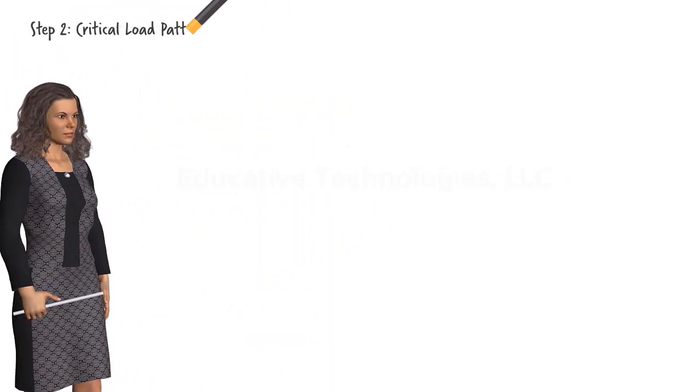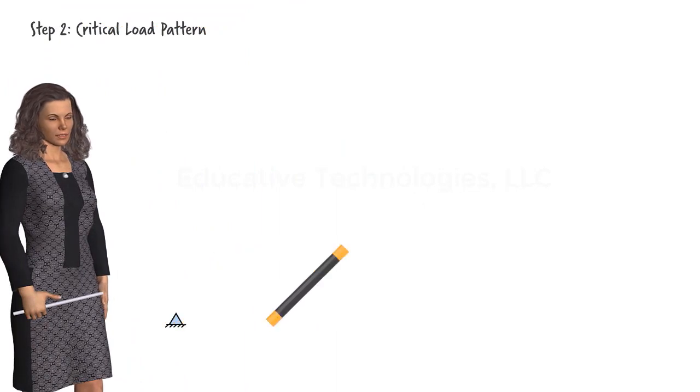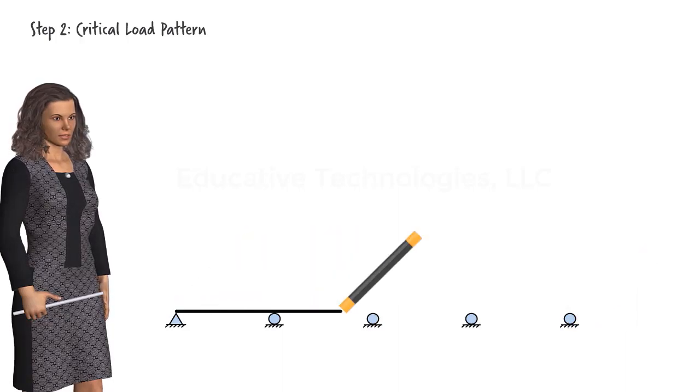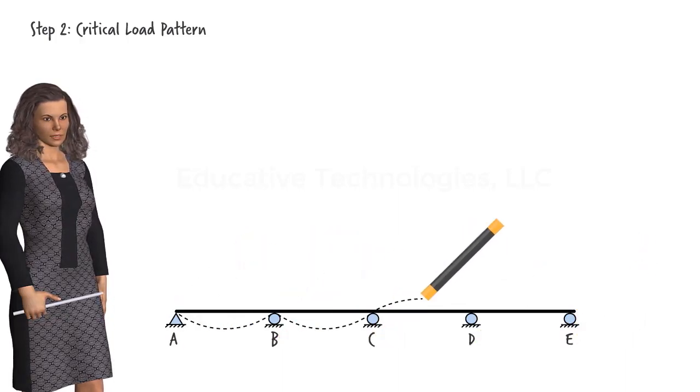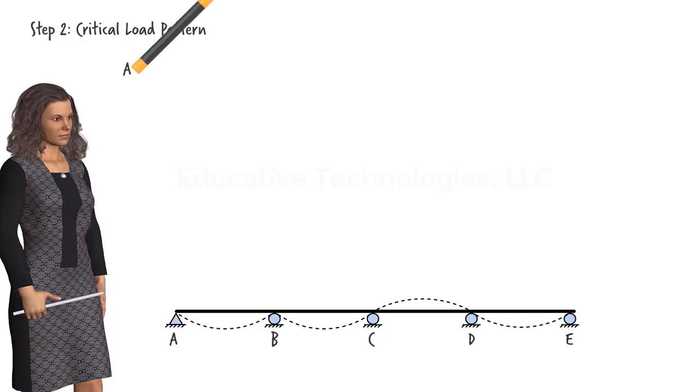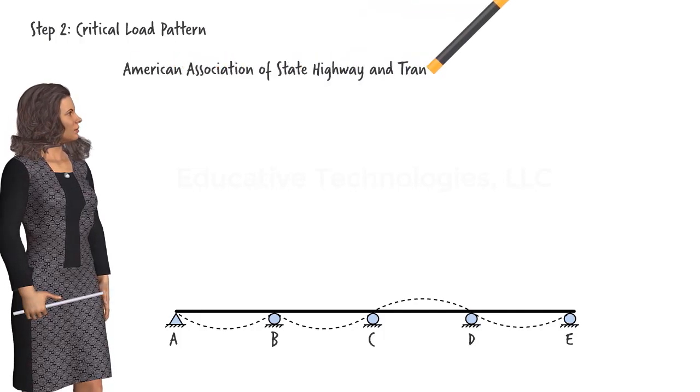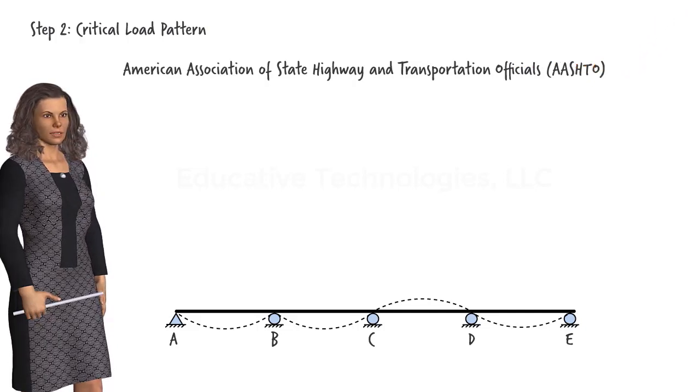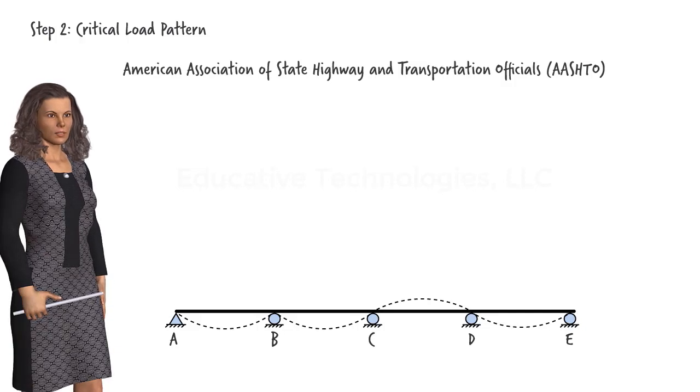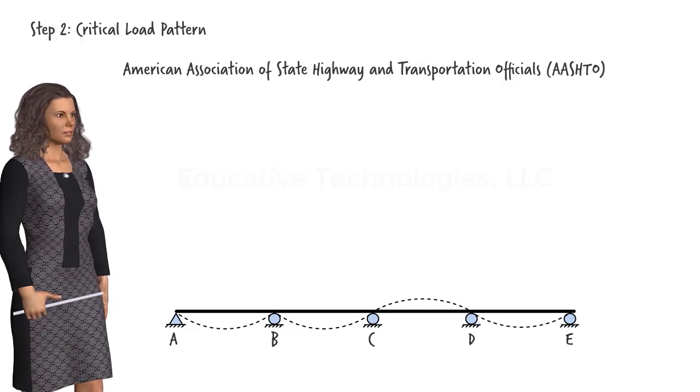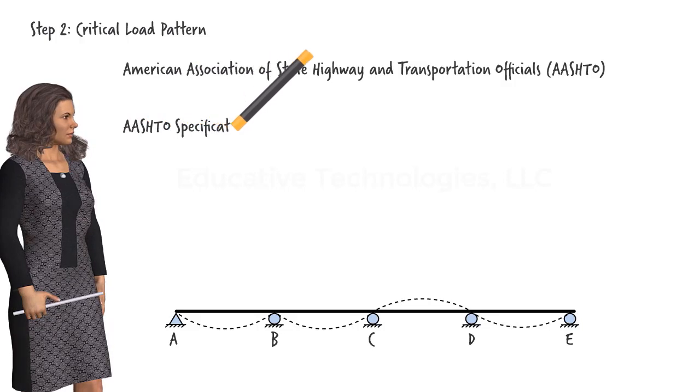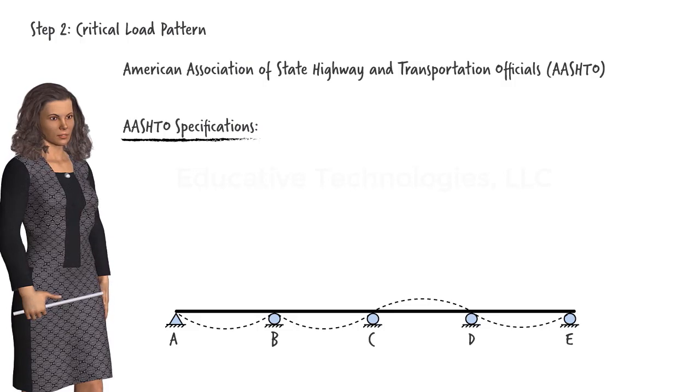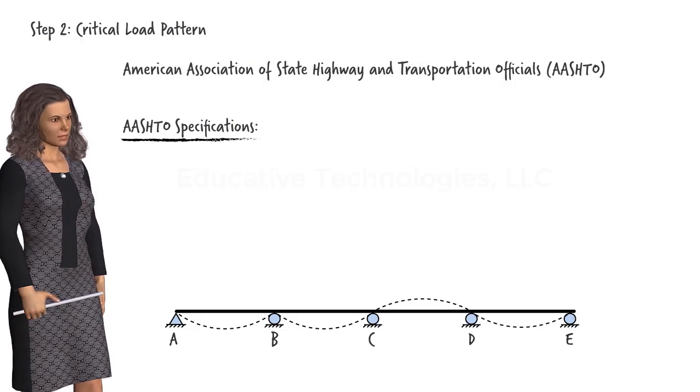Step 2. Determine the critical load pattern. Generally, the analysis and design of structural systems are governed by a set of specifications, prepared by professionals who are tasked with providing guidelines for ensuring the safety of built structures. In the United States, the American Association of State Highway and Transportation Officials, AASHTO for short, has published a set of specifications that are widely in use for the analysis and design of highway bridges. According to AASHTO specifications, in order to determine the maximum negative moment at an interior support in a bridge, two types of loads need to be placed on the structure.